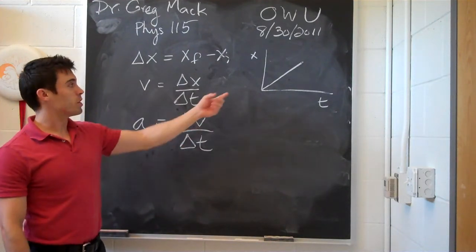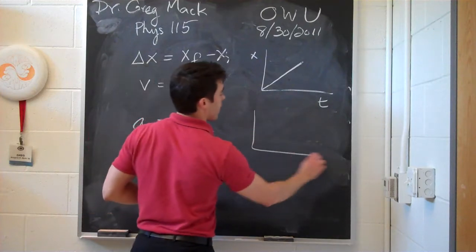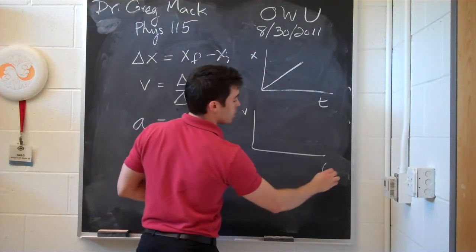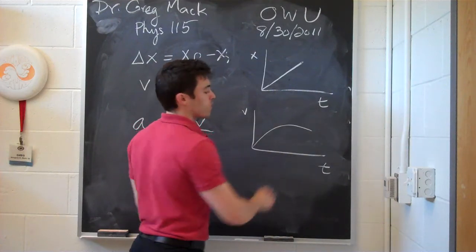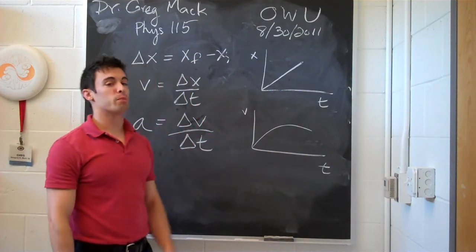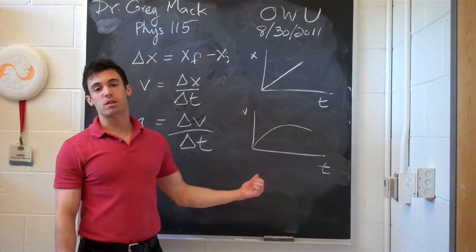And this has the same exact relationship there, that if you had a graph of v and t, and you had a line, then the acceleration is going to be the slope at that line at any point.